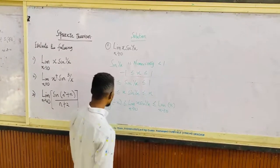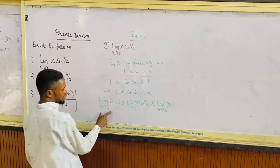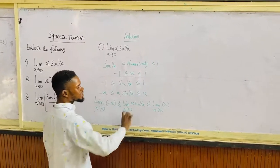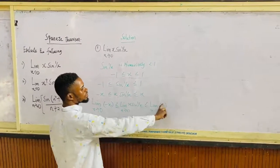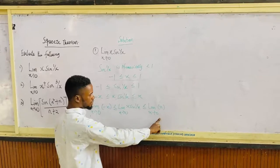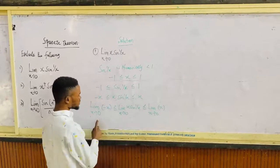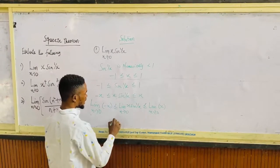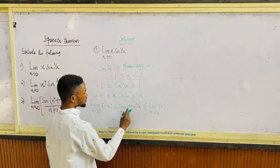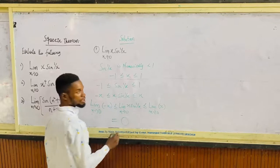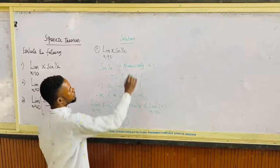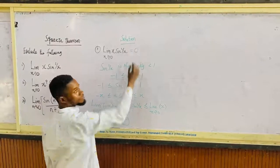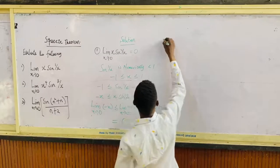That means the limit of minus x is less than or equal to the limit of x sine 1 over x at which x tends to 0, which is less than or equal to the limit of x. The limit of minus x is 0 and the limit of x is 0. That implies that the limit of this function is 0. So the limit of x sine 1 over x as x tends to 0 is 0.